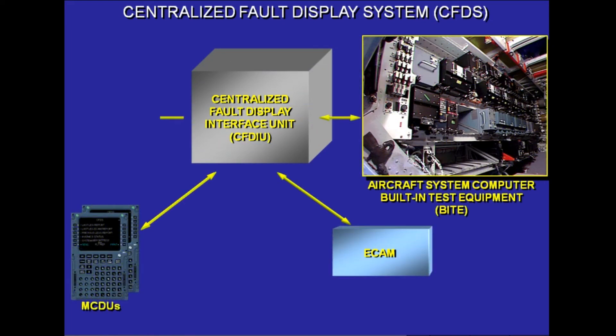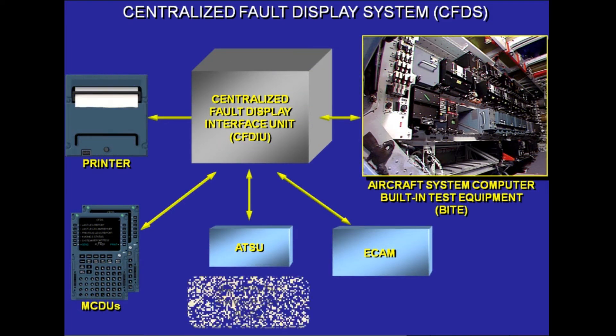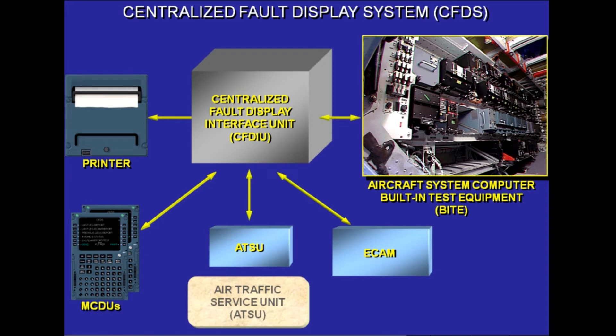The centralised fault display interface unit, CFDIU, centralises and memorises all information concerning aircraft system failures. Reading or printing of the failure information is done in the cockpit with any multipurpose control and display unit, MCDU, or the printer.